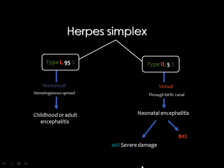One of the well-known viruses affecting the brain parenchyma is herpes simplex, and we have two types. Type 1 is very common, non-sexually transmitted, transmitted by the bloodstream, and affects children and adults. The more severe Type 2 is sexually transmitted, rare, transmitted through the birth canal, and results in neonatal encephalitis with about 80% death of the neonate; if the neonate survives, 20% will suffer severe damage.